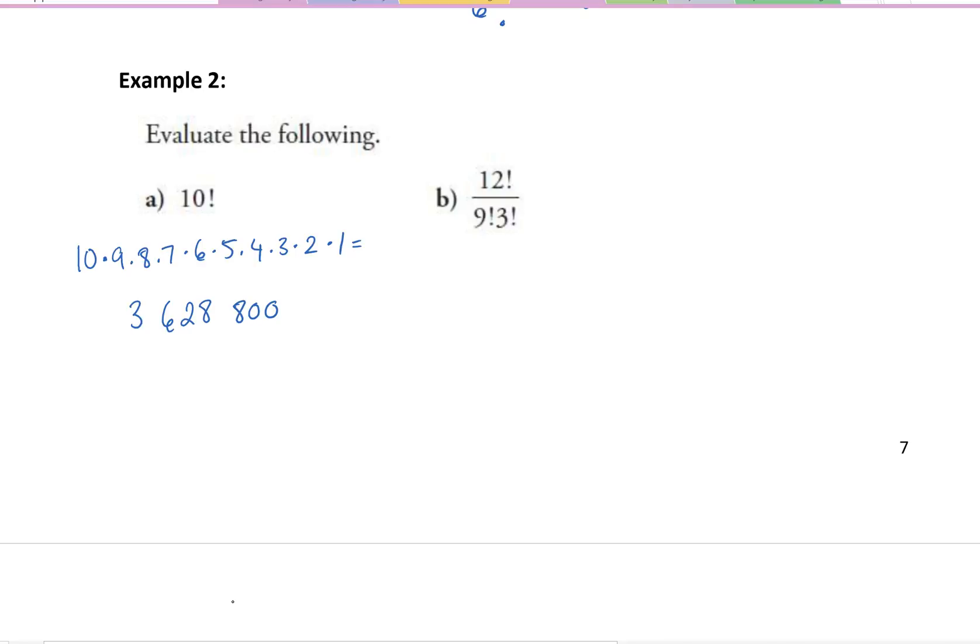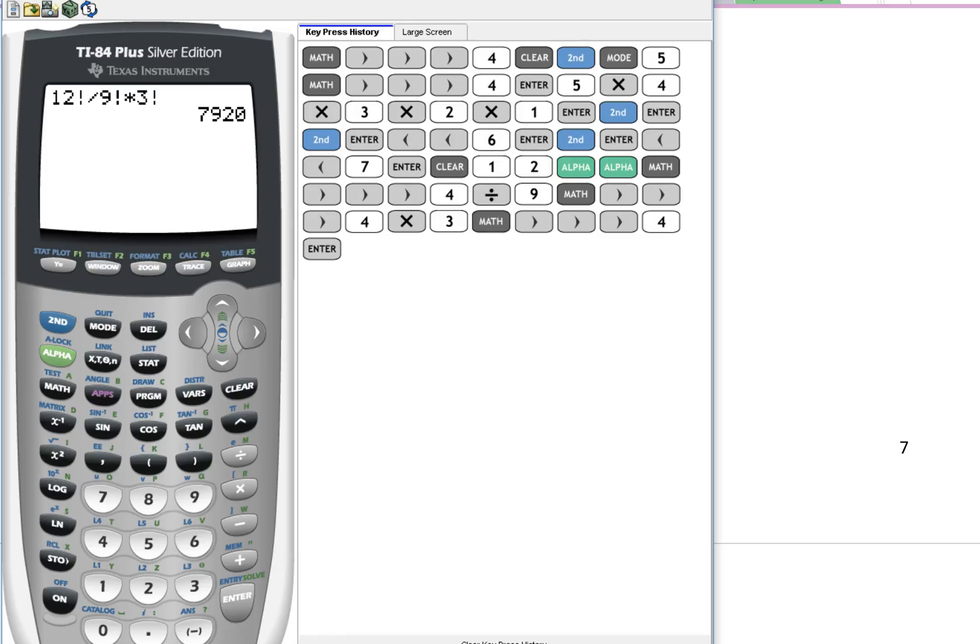So why am I getting an incorrect answer? Well it has to do with the brackets. When we see the question, it's understood that it's 12 divided by, and then 9 times 3 factorial in the denominator. But when we look at it in the calculator, the calculator is taking the 12 factorial divided by 9 factorial, and taking all of that and multiplying it by 3 factorial. But we want to keep that 3 factorial in the denominator. How do we do that? Use brackets.